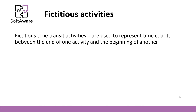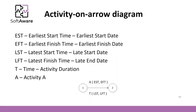What types of relationships can we have between these nodes? For each activity, we can consider the Earliest Start Time (EST), which is the earliest date the activity can start; the Earliest Finish Time (EFT), the earliest date it can finish; the Latest Start Time (LST); and the Latest Finish Time (LFT). We consider T as time — the activity duration. This will be important in the next few slides.